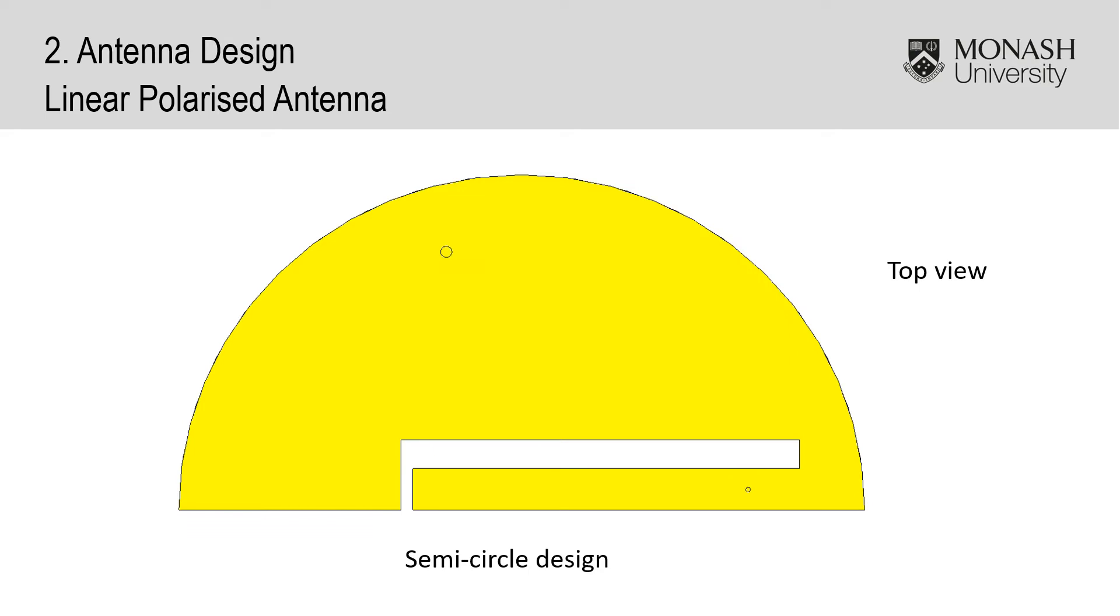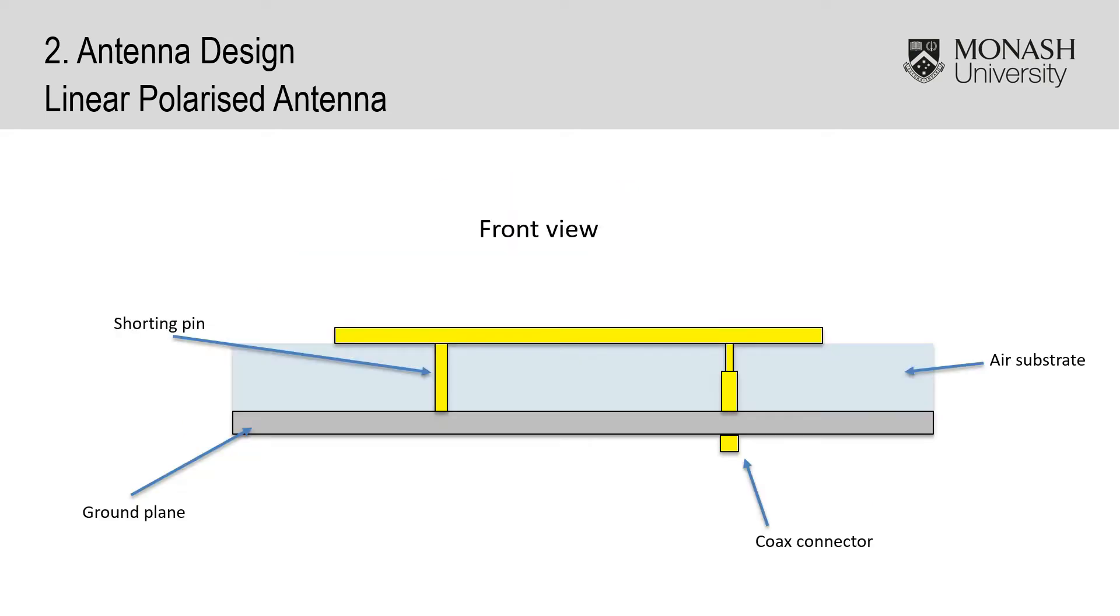For a compact design, a semicircular shape was used as it would decrease the patch size considerably. For the substrate, thick low dielectric constant materials were more beneficial as this would help with the antenna bandwidth, so air was chosen as the substrate.